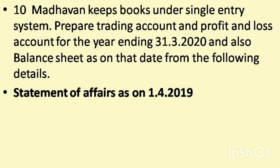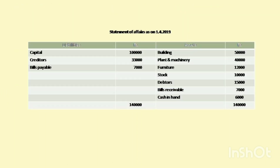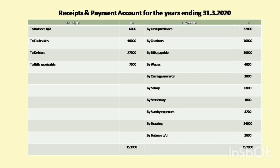Question No. 10: Madhavan keeps books under single entry system. Prepare trading account and profit and loss account for the year ending 31-03-2020, and also a balance sheet as on that date. Statement of affairs as on 1-04-2019: Capital Rs. 1,00,000; Creditors Rs. 33,000; Bills payable Rs. 7,000. Assets: Building Rs. 50,000; Plant and machinery Rs. 40,000; Furniture Rs. 12,000; Stock Rs. 10,000; Debtors Rs. 15,000; Bills receivable Rs. 7,000; Cash in hand Rs. 6,000. Total of both sides: Rs. 1,40,000.